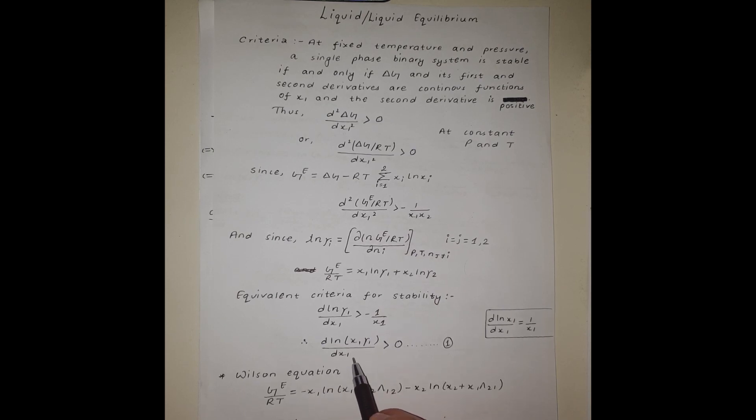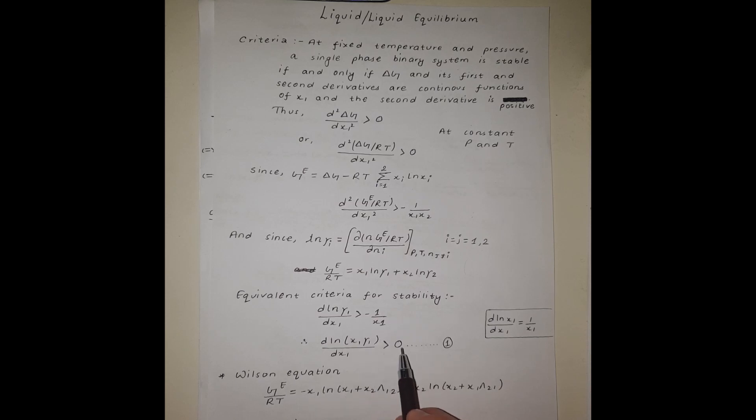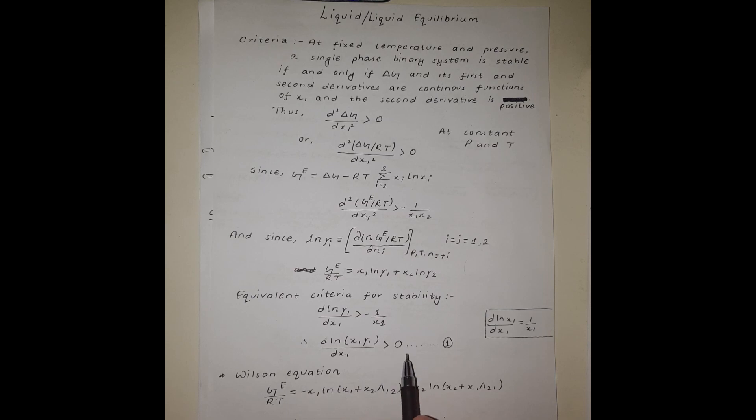This criterion states that if the derivative of ln(x1 · γ1) with respect to x1 — the mole fraction of species one — is greater than zero, we will have a single phase; and if it is less than zero, we will have two phases.